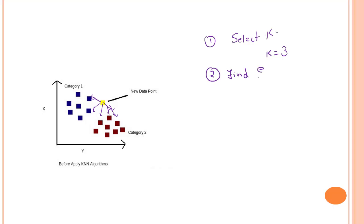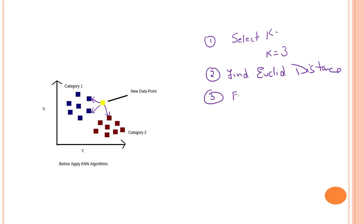So step one was select k, and step two was find the Euclidean distance. Now the third step is to take the k nearest neighbors as per the calculated Euclidean distance. Now that I have my Euclidean distances, I am able to predict what my three nearest neighbors are. After applying the Euclidean distance from my new data point to all the other data points, I can say this is my nearest neighbor, this is my nearest neighbor, and this is my nearest neighbor.